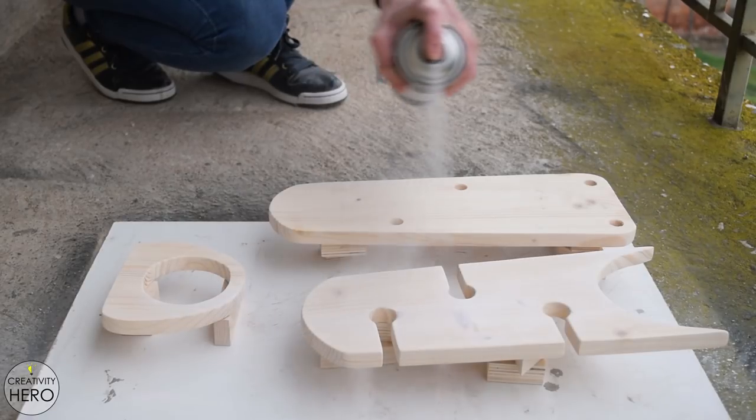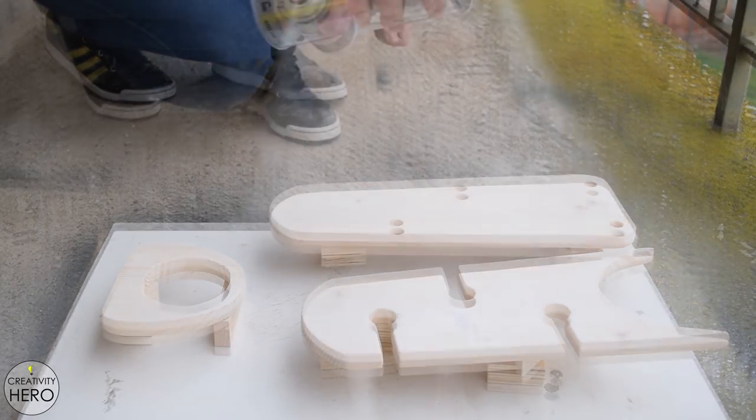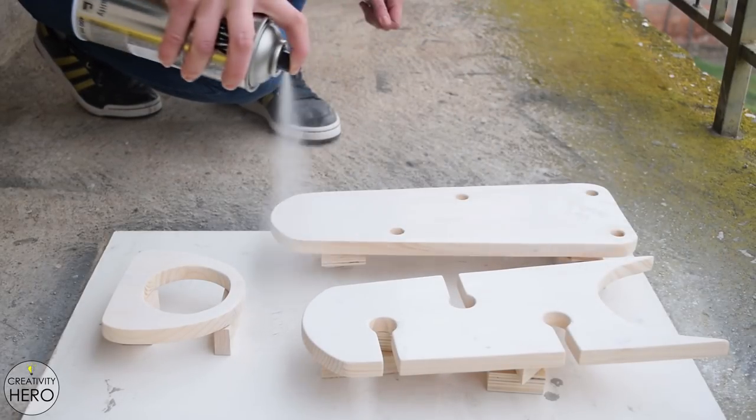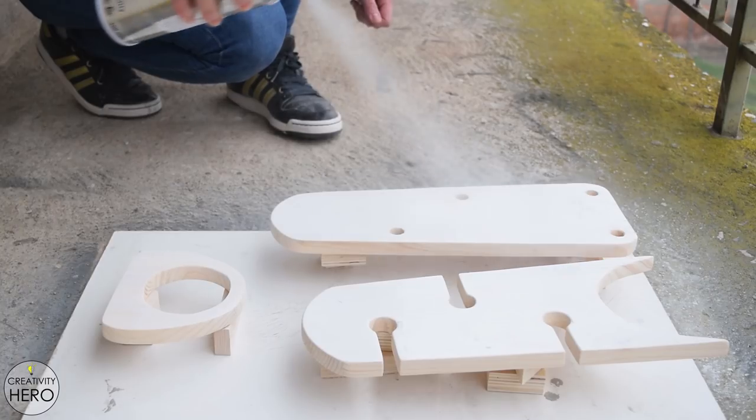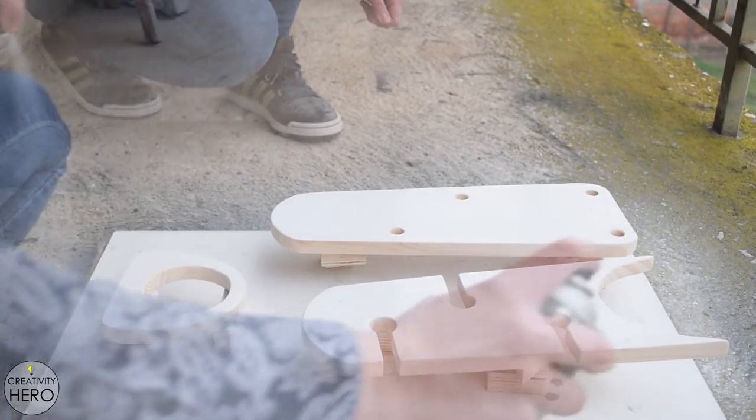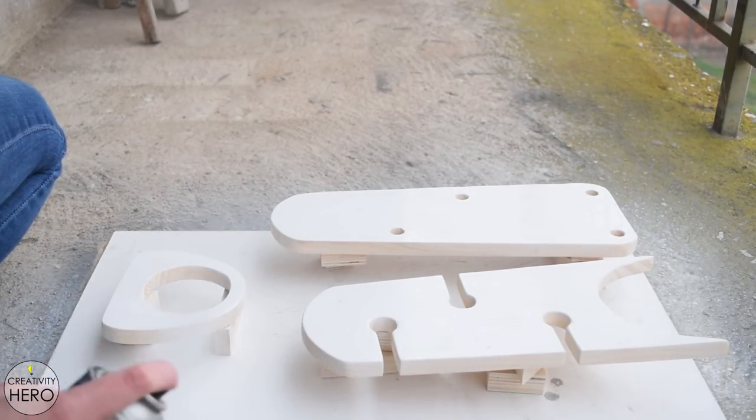Once I'm done sanding I can paint the wooden pieces with white spray paint. I chose white because it matches copper really well. I applied three coats of paint which was enough to get a nice white color. I waited at least one hour between each coat.